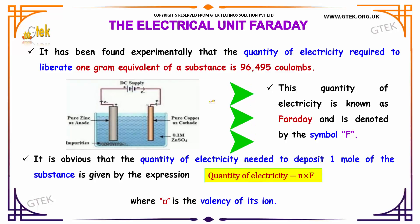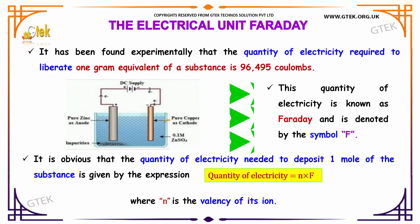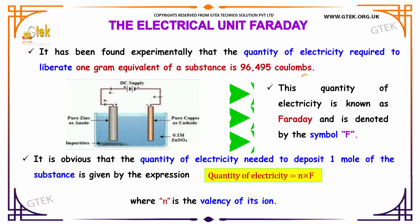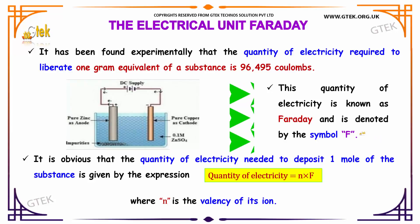Let us now see about the electrical unit Faraday. It has been found experimentally that the quantity of electricity required to liberate one gram equivalent of a substance is 96,495 C. This quantity of electricity is known as Faraday and it is denoted by the symbol F.